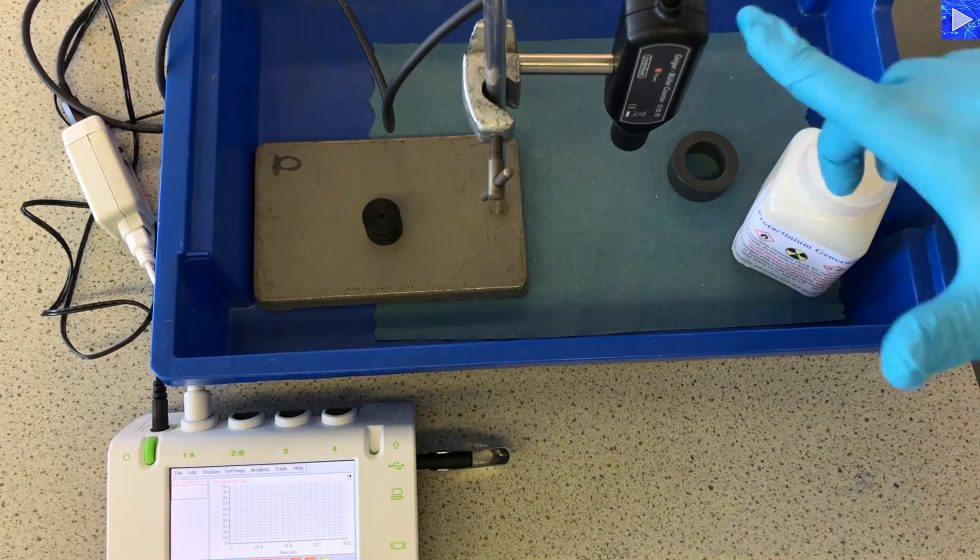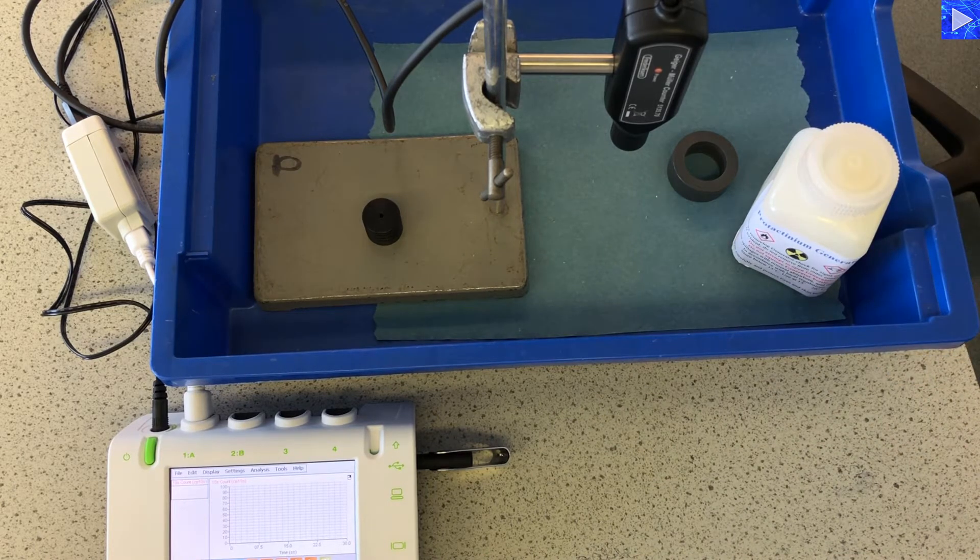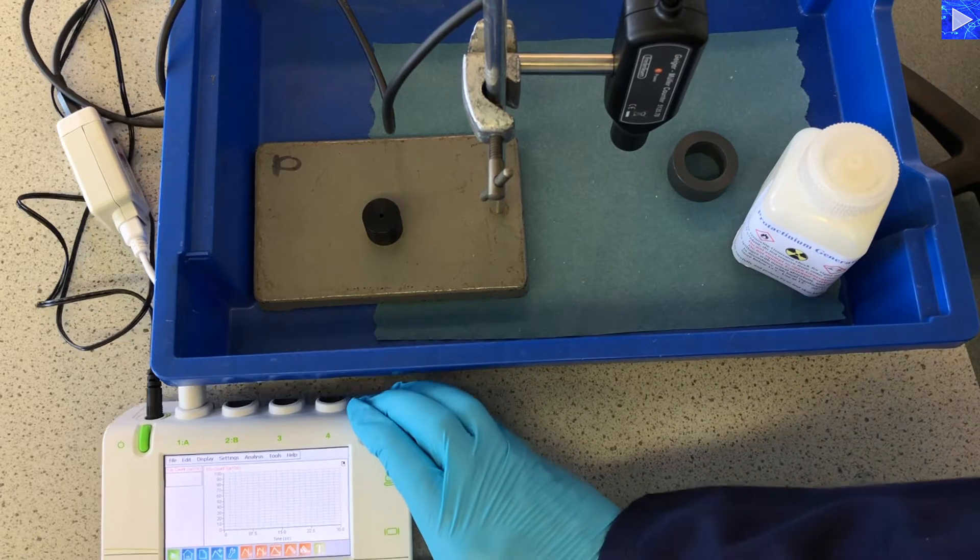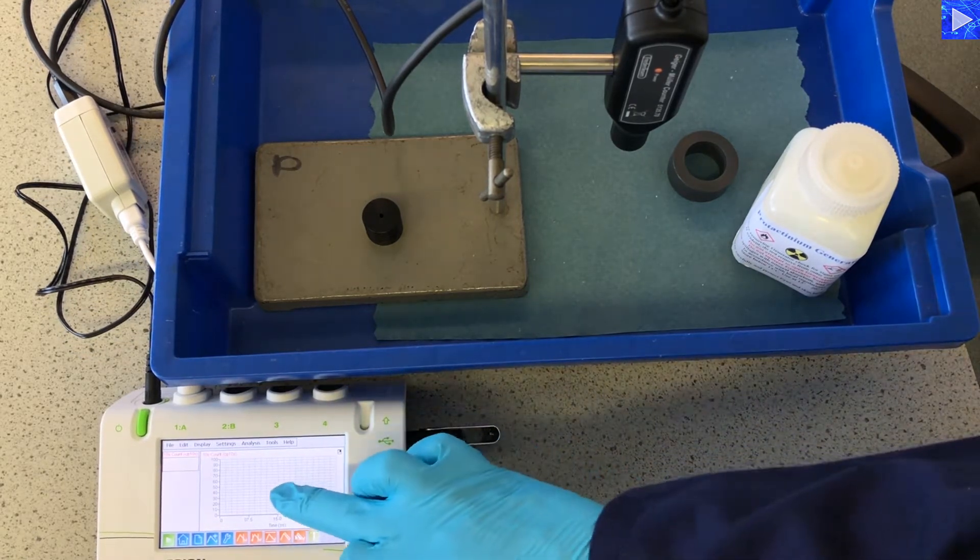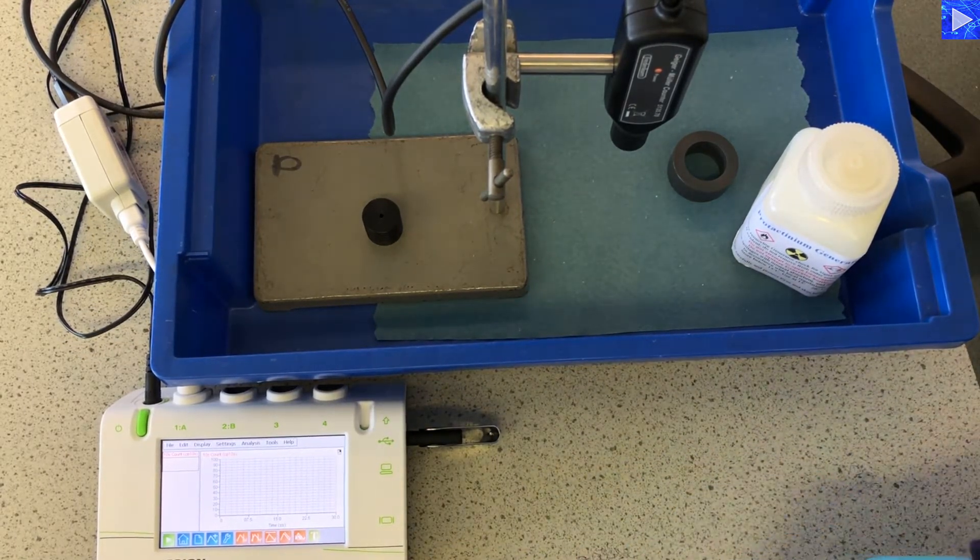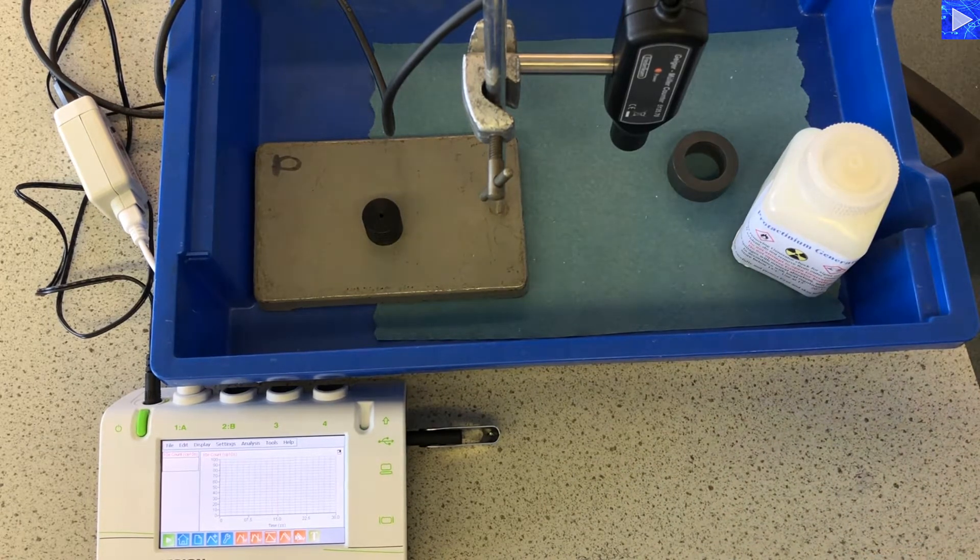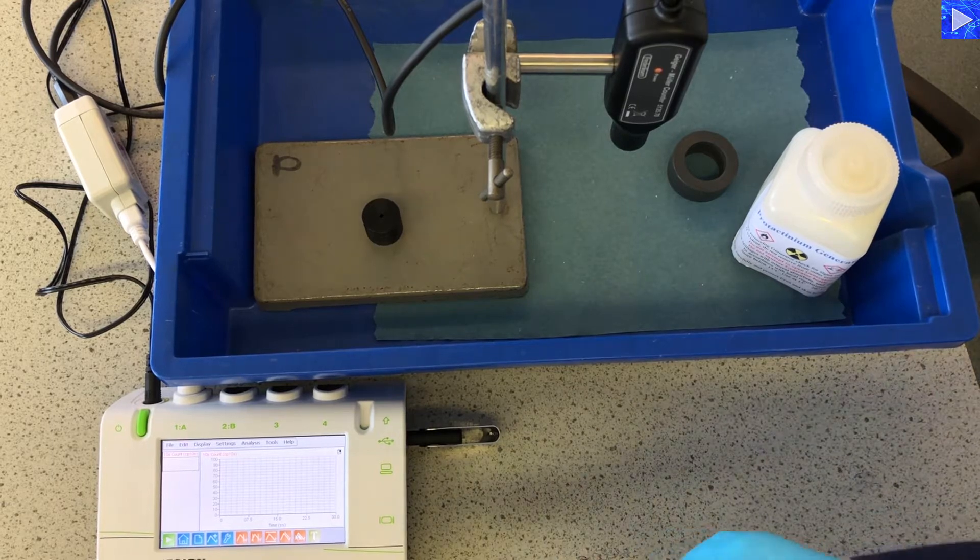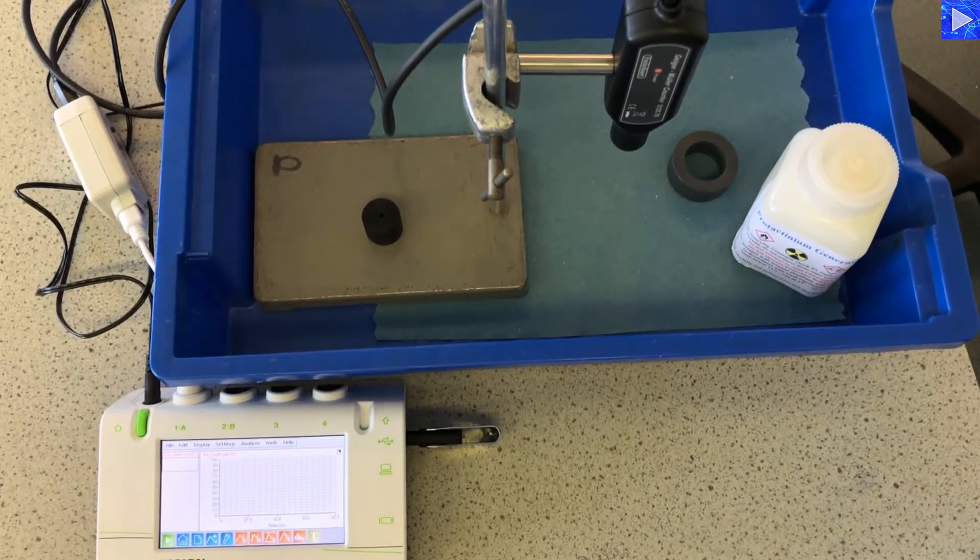This is my GM tube so I'll be measuring the ionisation events with that. The GM tube is connected to this data logger here, so we'll be getting live data in 10 second counts. Every 10 seconds it will give us the counts per 10 seconds and it will be logging it for us.